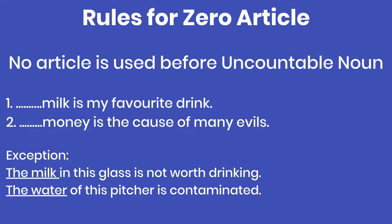The next rule says: no kind of article is used before an uncountable noun. What is an uncountable noun? It is a noun that we cannot count — we can only measure it, or sometimes we cannot even measure it. Abstract nouns can also be included here. So before an uncountable noun, no kind of article can be used.